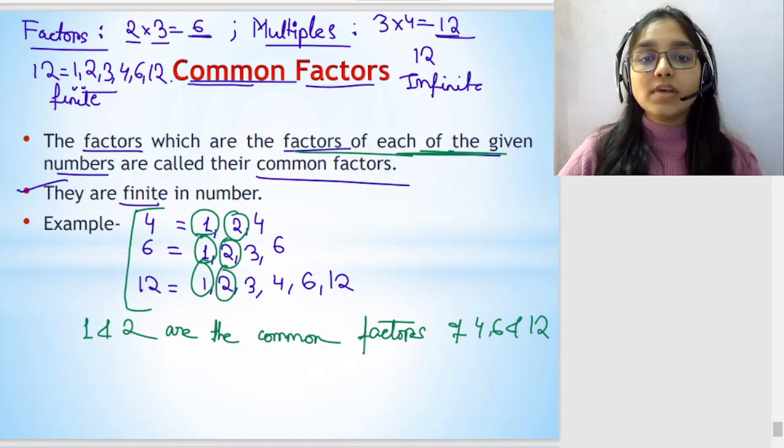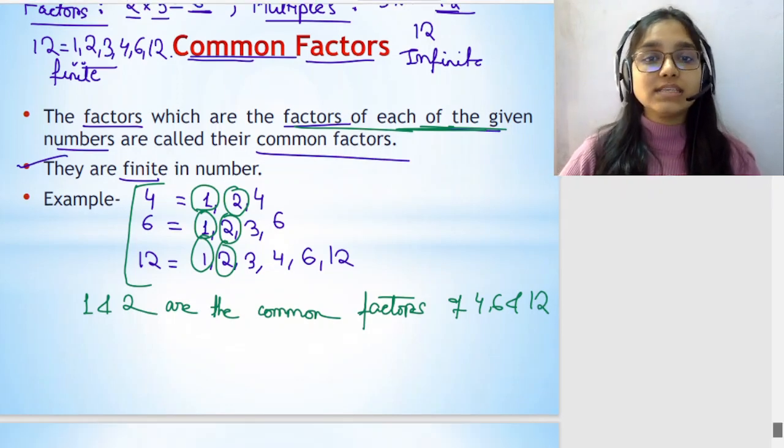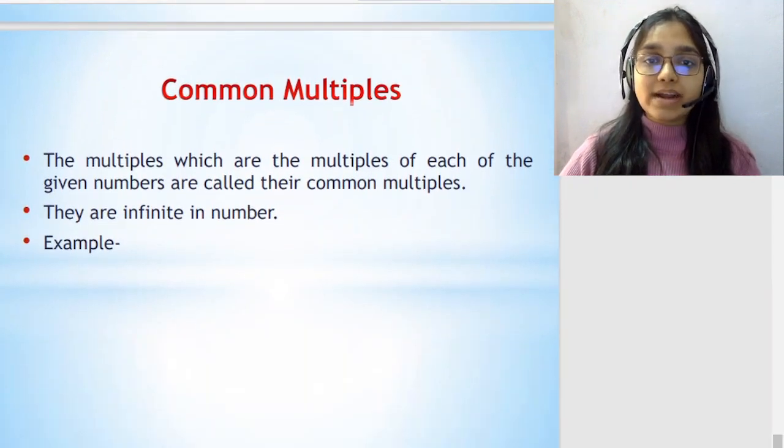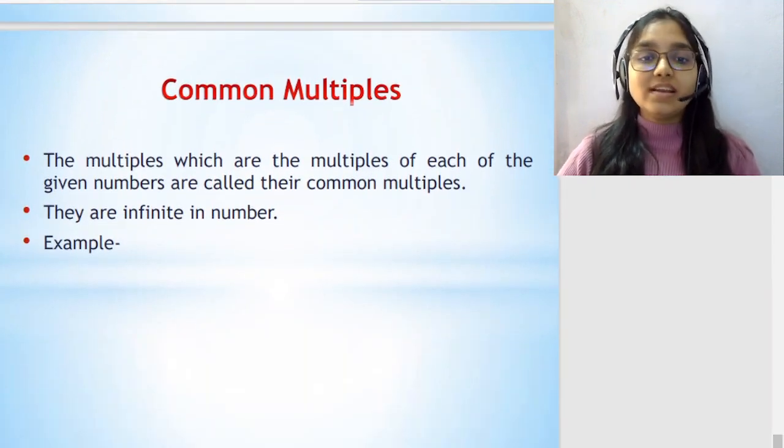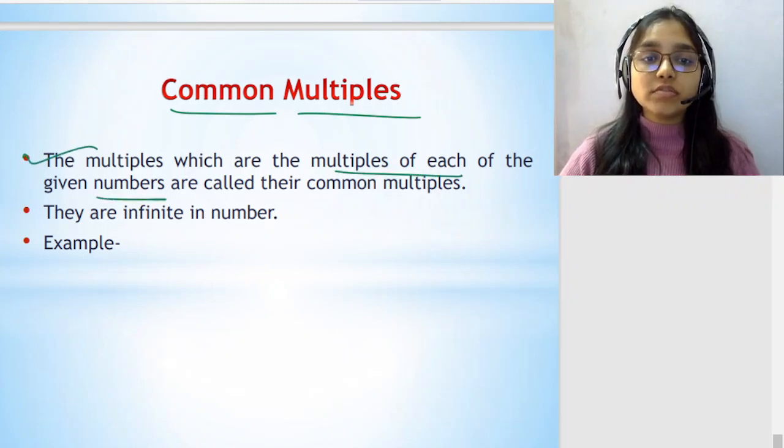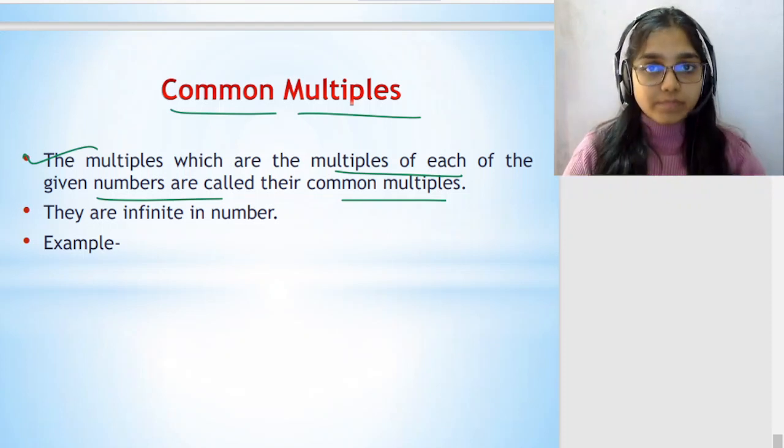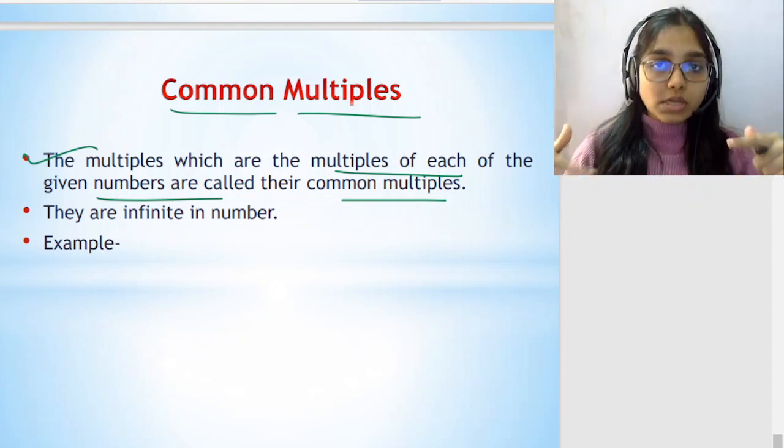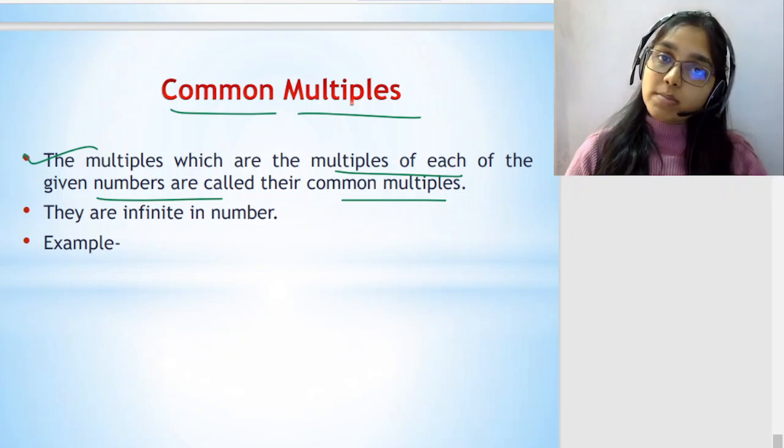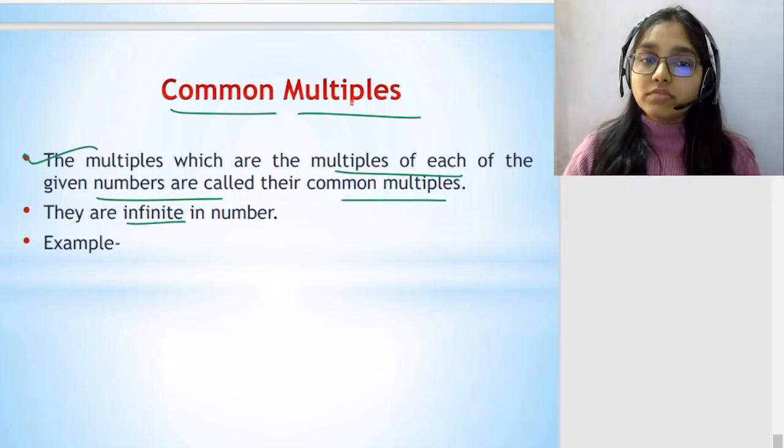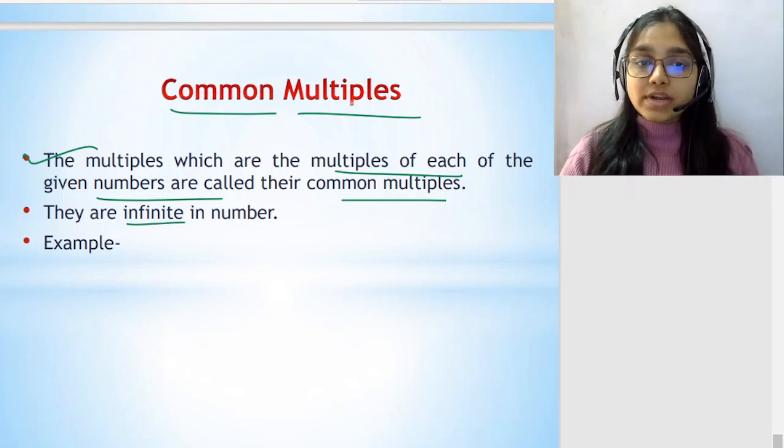I hope that is clear. Similarly, taking other numbers you can practice. Now let's talk about common multiples. So common multiples means the multiples which are the multiples of each of the given numbers are called the common multiples. When numbers are given, you write their multiples. So whichever multiples are common to those numbers, that is the common multiple. Those multiples are infinite, we already know.